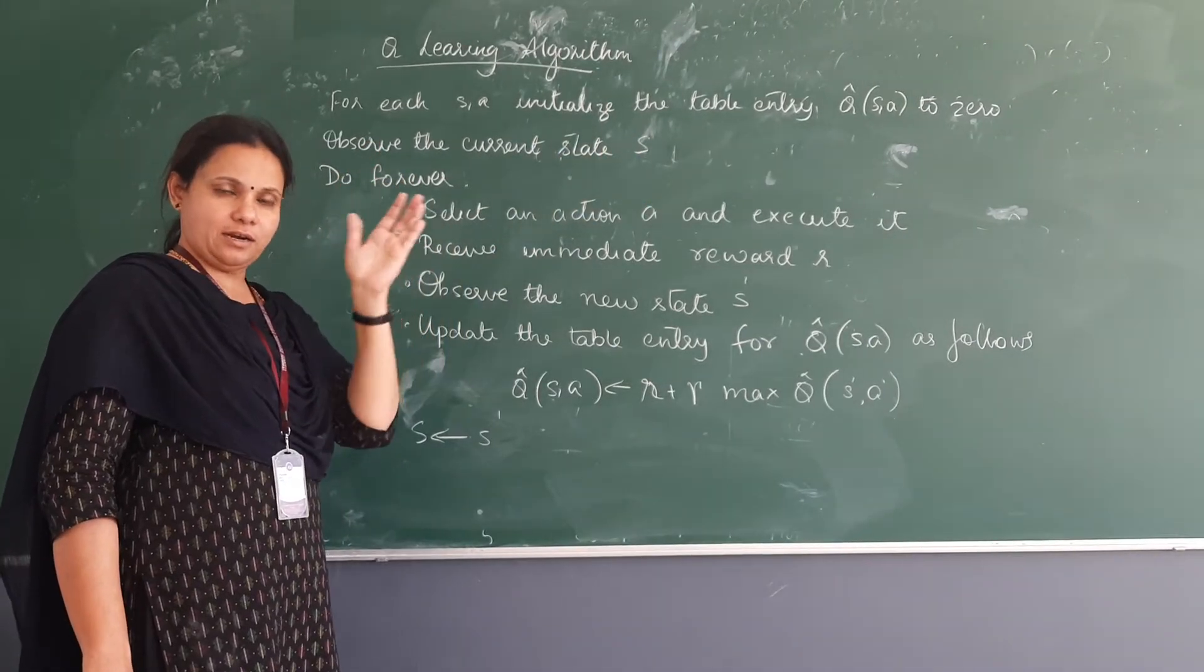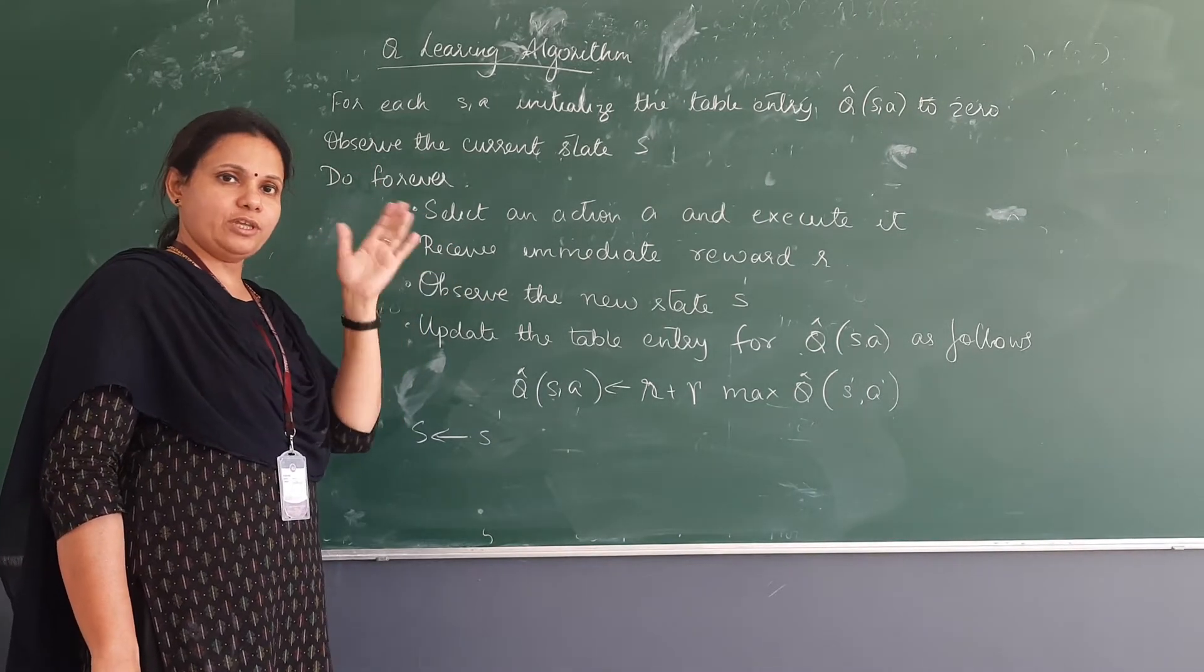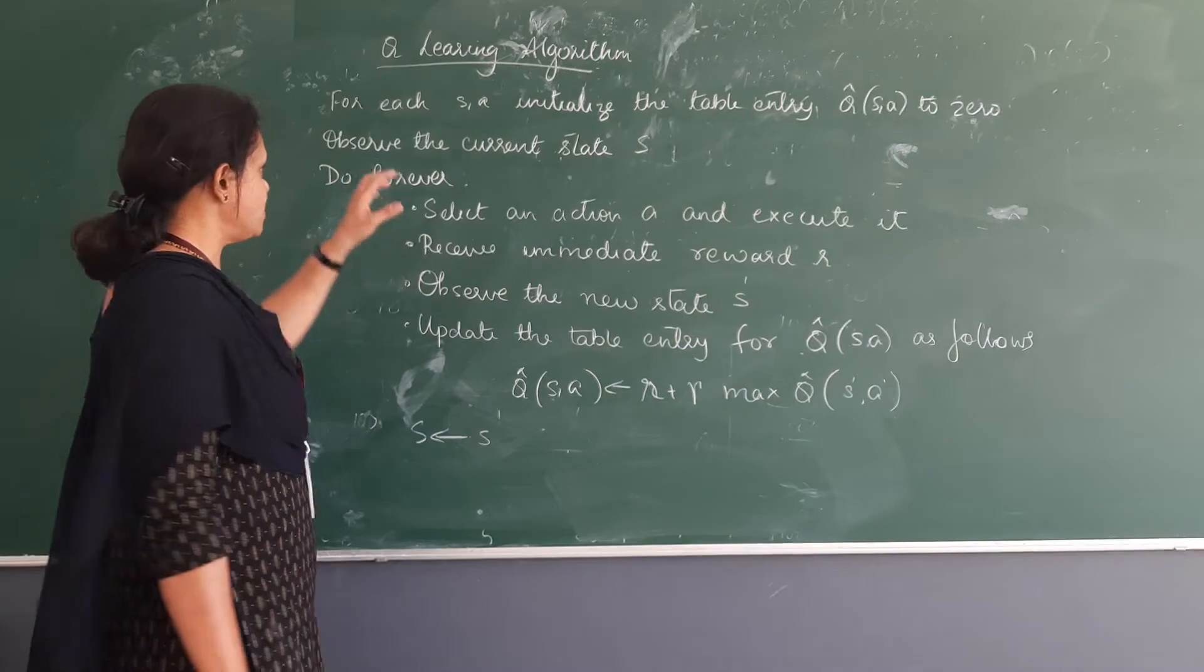So we had 5 nodes and 5 nodes. That means we had 5 columns and 5 rows. So for each entity, we initialize it to zero.